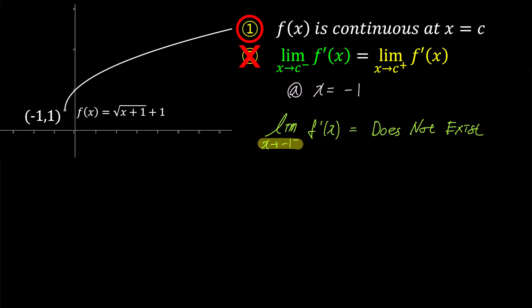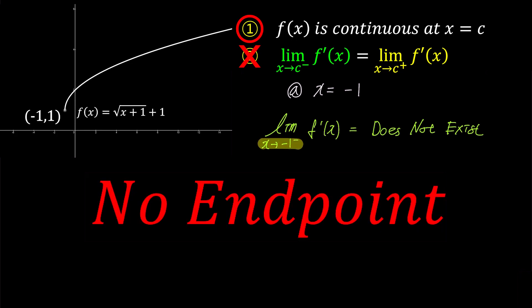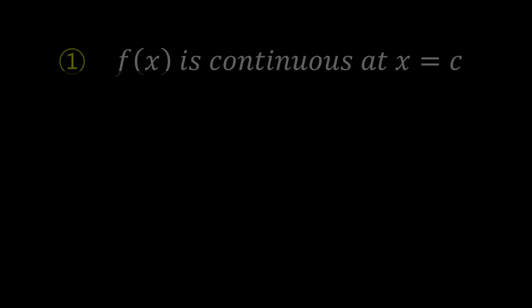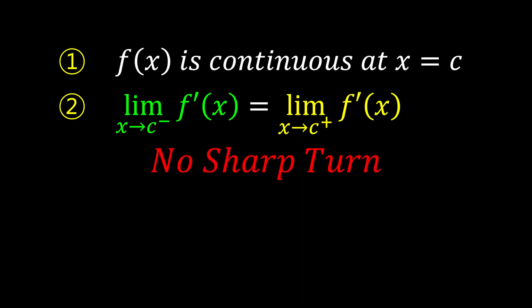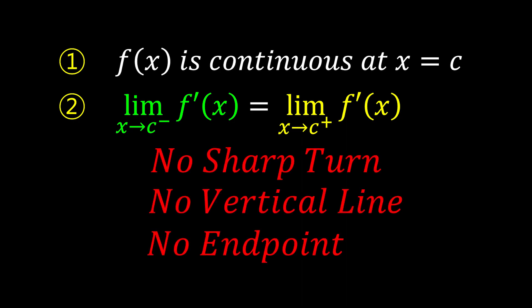In summary, the function is not differentiable at the endpoint. To summarize today's lesson: for a function to be differentiable at point c, it needs to satisfy two conditions. First, the function must be continuous at c. Second, the left-hand limit and right-hand limit of f prime of x at c must be equal. In simpler terms, the function should be drawable without lifting the pen, and there should be no sharp turns, vertical lines, or endpoints.